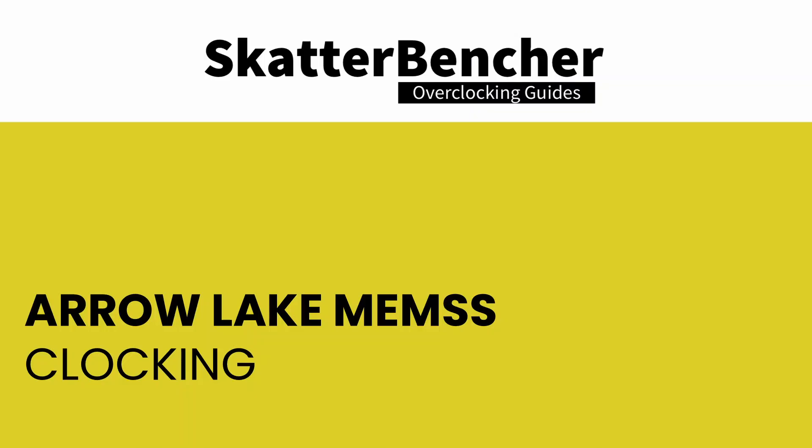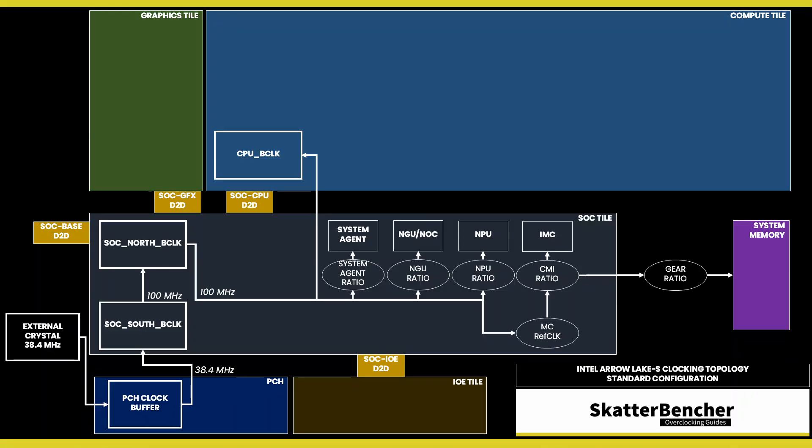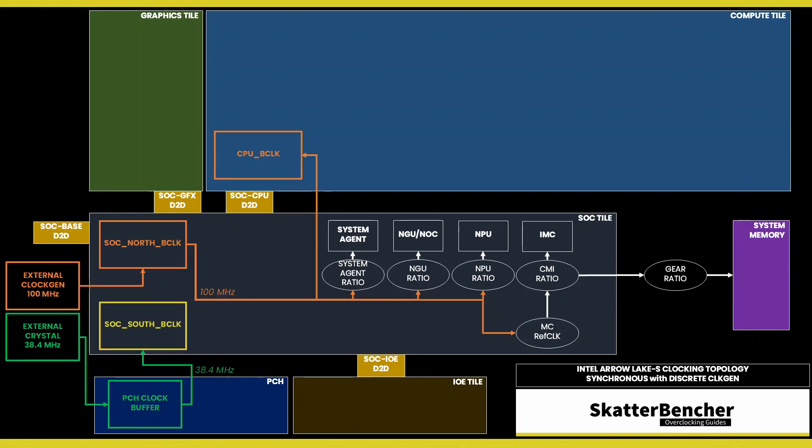The clocking of the two DDR5 memory controllers of Arrow Lake is not substantially different to how it was on Raptor Lake. There's still a reference clock that gets multiplied by a ratio to get the eventual operating frequency, and it is still intimately tied to the system memory. The 100 MHz reference clock is derived internally from the SOC PLL. However, it can also be clocked with an external clock generator, which provides the reference clock for the SOC tile. This clock affects nearly all the IP blocks of Arrow Lake.